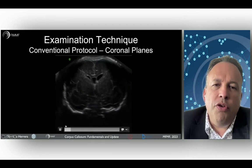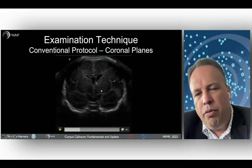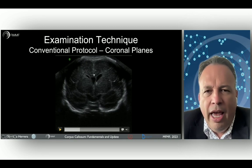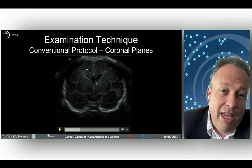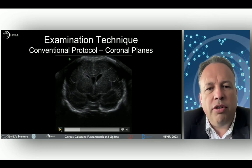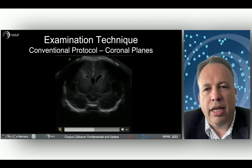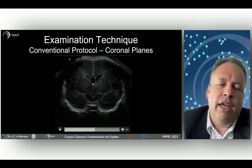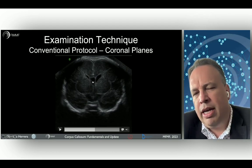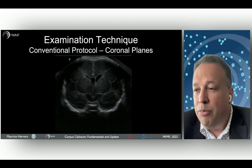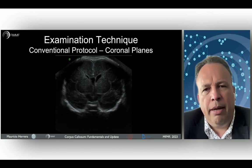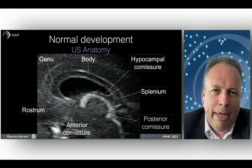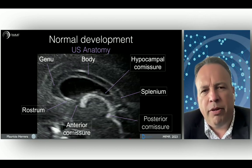What about the coronal planes? When using the coronal plane, you can analyze the normal shape of the corpus callosum — the C-form and the hypoechoic appearance — and the prolongation of the anatomical structure into the cerebral lobes. It is also important to evaluate the surrounding normal anatomy, for example the shape of the cavum septum pellucidum, because an abnormal shape of the cavum septum pellucidum can indicate abnormalities in the midline structures of the fetal brain.